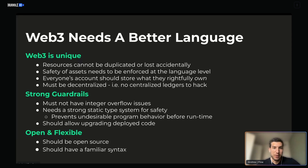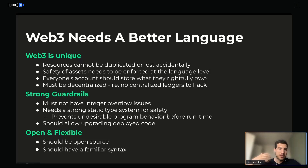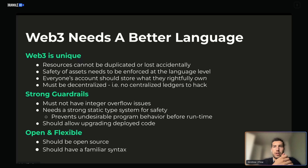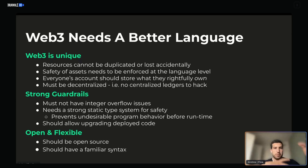Stemming from the experience of building CryptoKitties and trying to build a simple game on Ethereum — there needed to be a language that doesn't make it hard to write complex, sophisticated logic beyond a simple NFT contract. The first characteristic Cadence needs to have is that resources cannot be duplicated or lost accidentally. The safety of these assets needs to be enforced at the language level, meaning that transactions should fail completely if the safety of assets is put at risk.